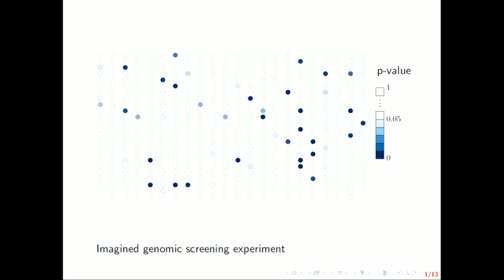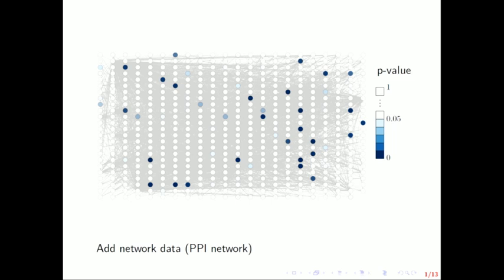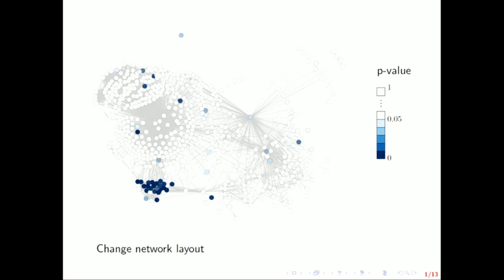We're going to do some network-based stuff. In our applications, the network data comes from PPI data, protein-protein interaction data. It just means that there's an edge between two vertices if the genes have proteins that interact. If we rearrange the network here, vertices are closer to vertices they're more connected to now.